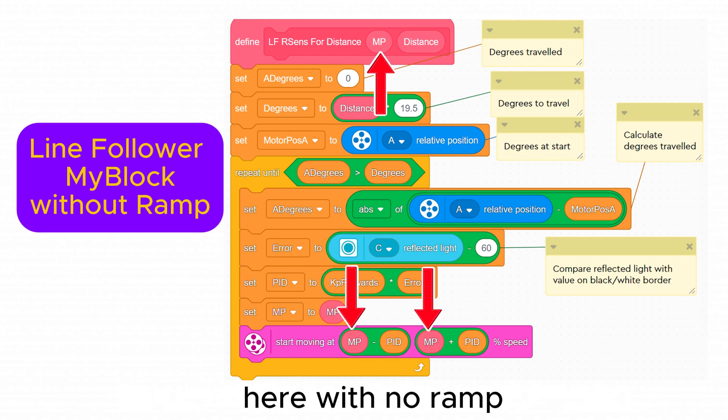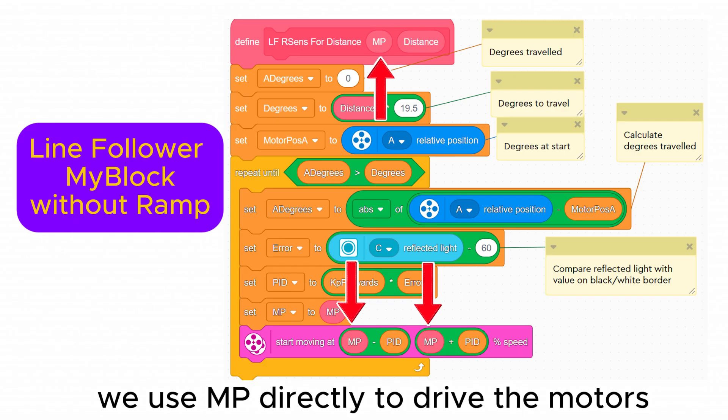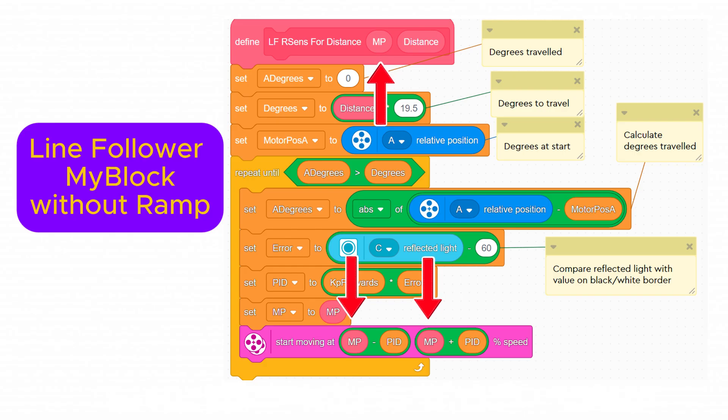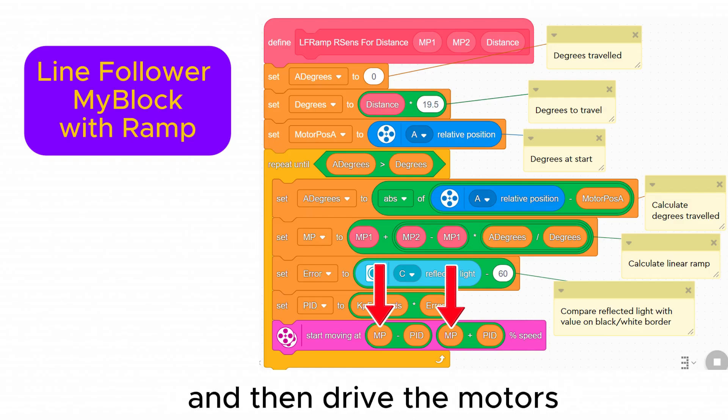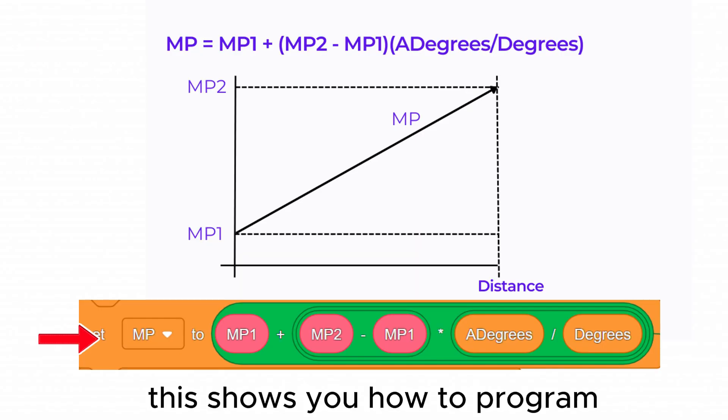Here with no ramp we use MP directly to drive the motors. With the ramp we calculate the variable MP using the equation and then drive the motors with the variable. This shows you how to program the variable MP for the ramp equation.